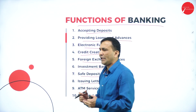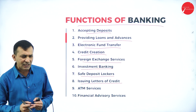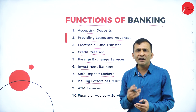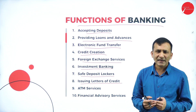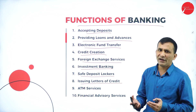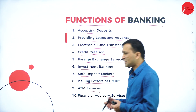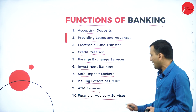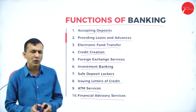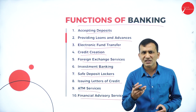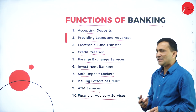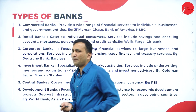Eighth is issuing a letter of credit — when doing transactions between other states or countries where seller and buyer are strangers, the bank provides a letter of credit to establish trust. Ninth is ATM service. Tenth is financial advisory service — individual people may not know where to open an account or where to invest, so banking services provide financial advisory guidance.